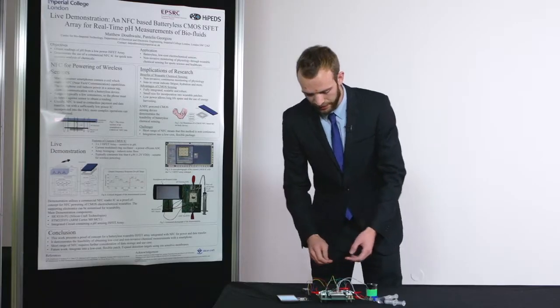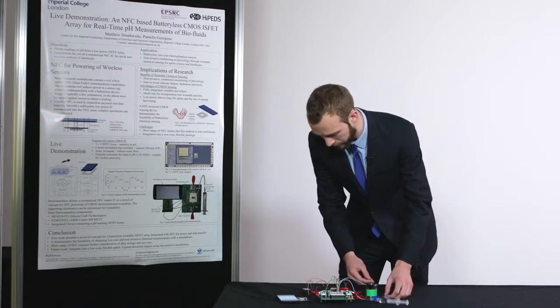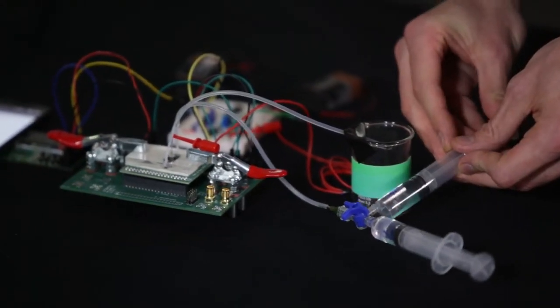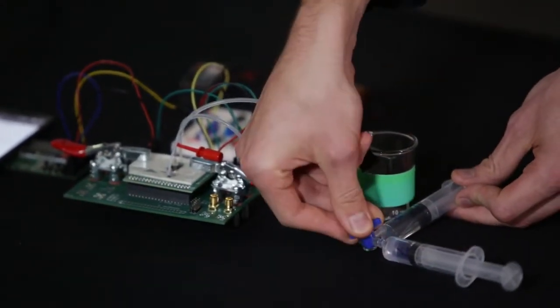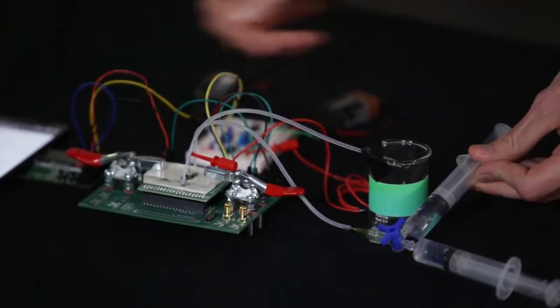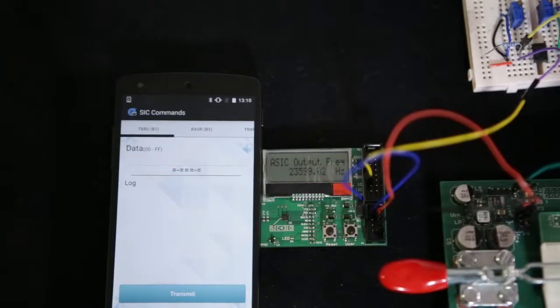For the demonstration, I currently have a pH solution of pH 7 applied, and then I will apply a lower pH to the surface of the chip using this flow cell. We'll see a change on the LCD screen—we'll see a change in frequency.